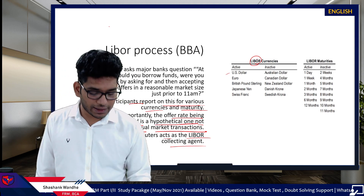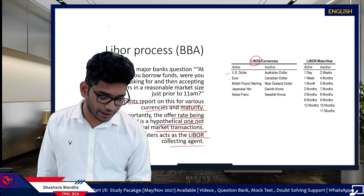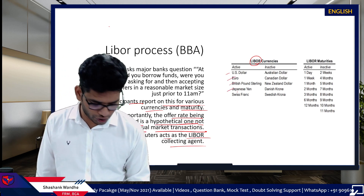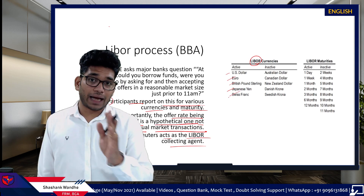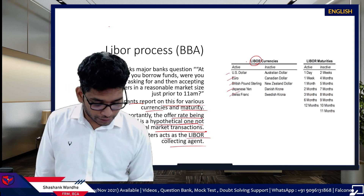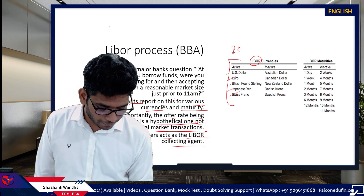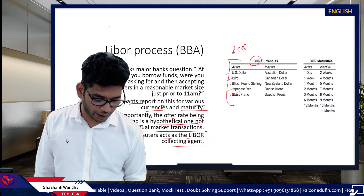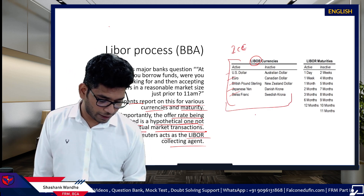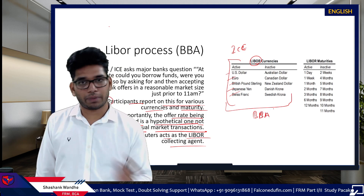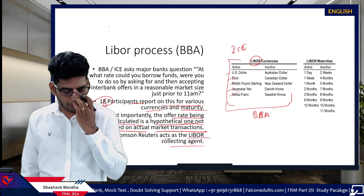Currently active LIBOR currencies are USD, Euro, Pounds, Japanese Yen, and Swiss Franc. Other currencies that were active under the BBA became inactive after countries lost faith in LIBOR and came up with their own local benchmark rates.